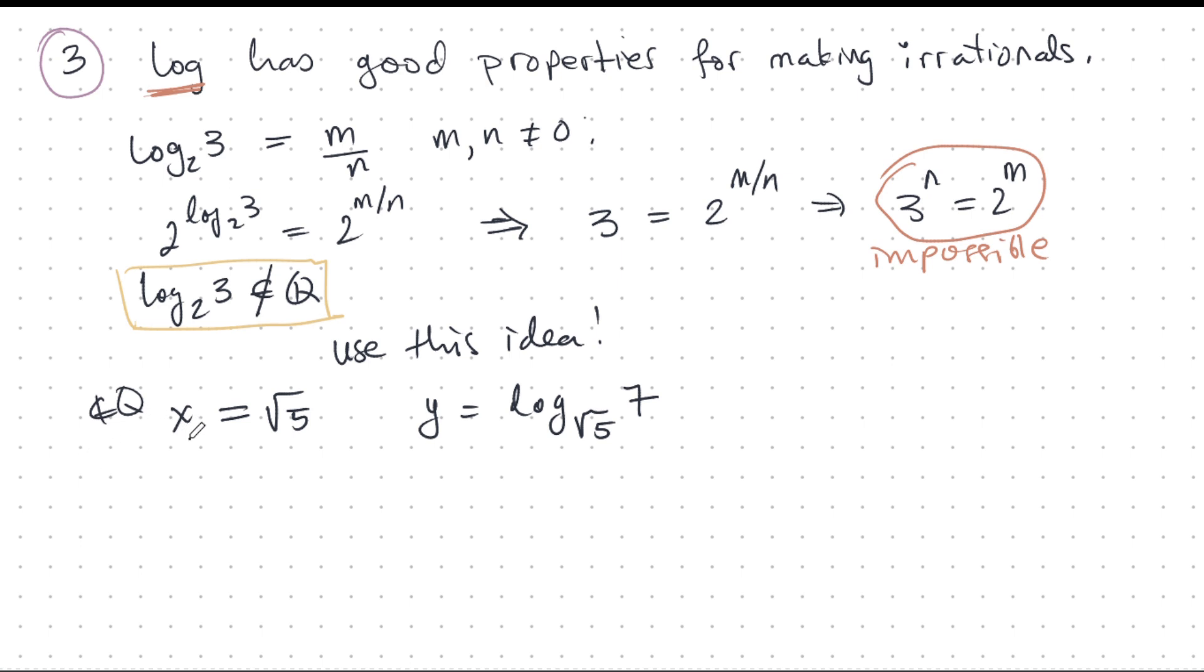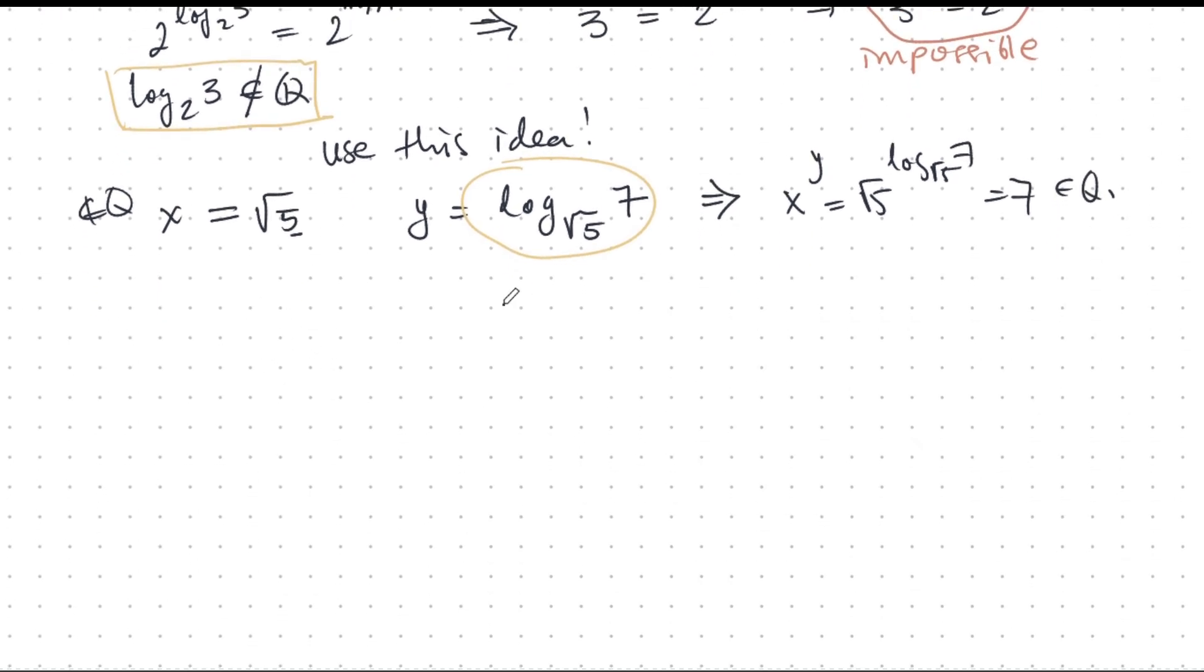Root 5, but this one I'm assuming is not in Q, but I have to prove that. But if both are irrational, then I get x power y is root 5 power log root 5, 7. And this is 7, and that's in Q. So my job now is to examine this and to prove that this is not rational.